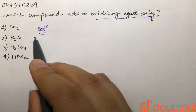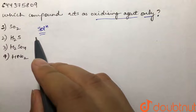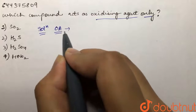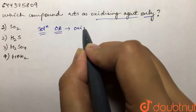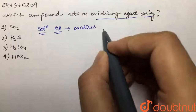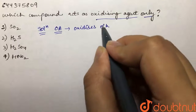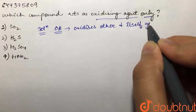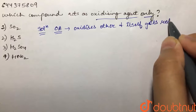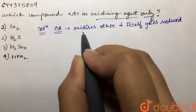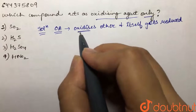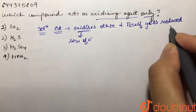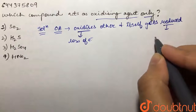We are given these four species and we need to find out which compound can act as only an oxidizing agent. For this, first we'll see what an oxidizing agent is. An oxidizing agent is the one that oxidizes the other species and itself gets reduced. Oxidation means loss of electrons, and reduction means gain of electrons.